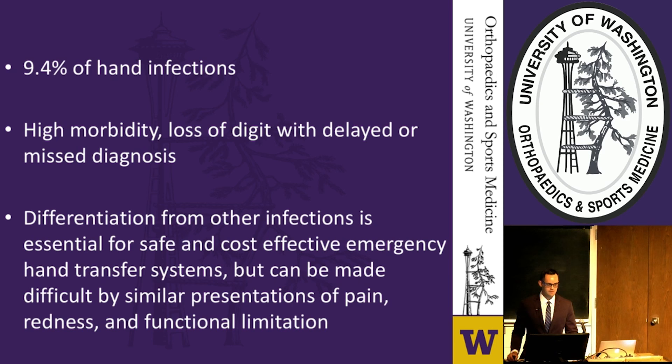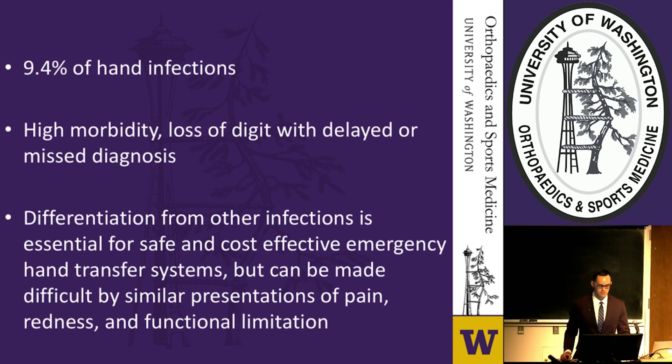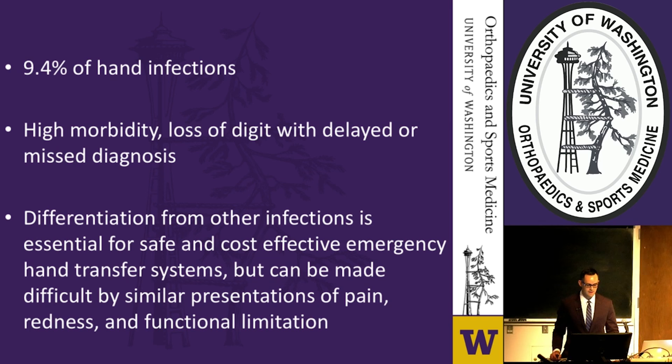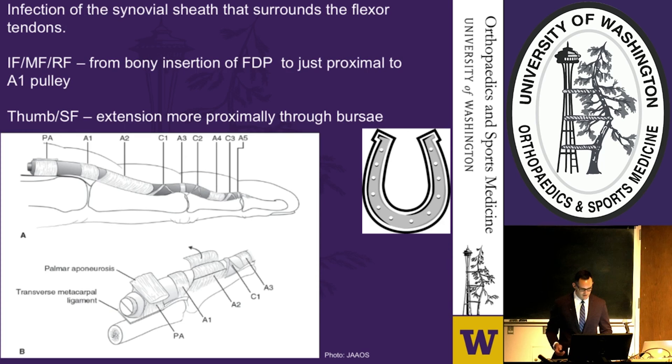Flexor tenosynovitis represents almost 10% of hand infections in some series. There is high morbidity as well as potential loss of digit with delayed or misdiagnosis. Differentiation from other infections is essential, both for safe and cost-effective hospital transfer decisions. This diagnosis can be made difficult by similar presentations of pain, redness, and functional limitation seen in cellulitis and abscesses.